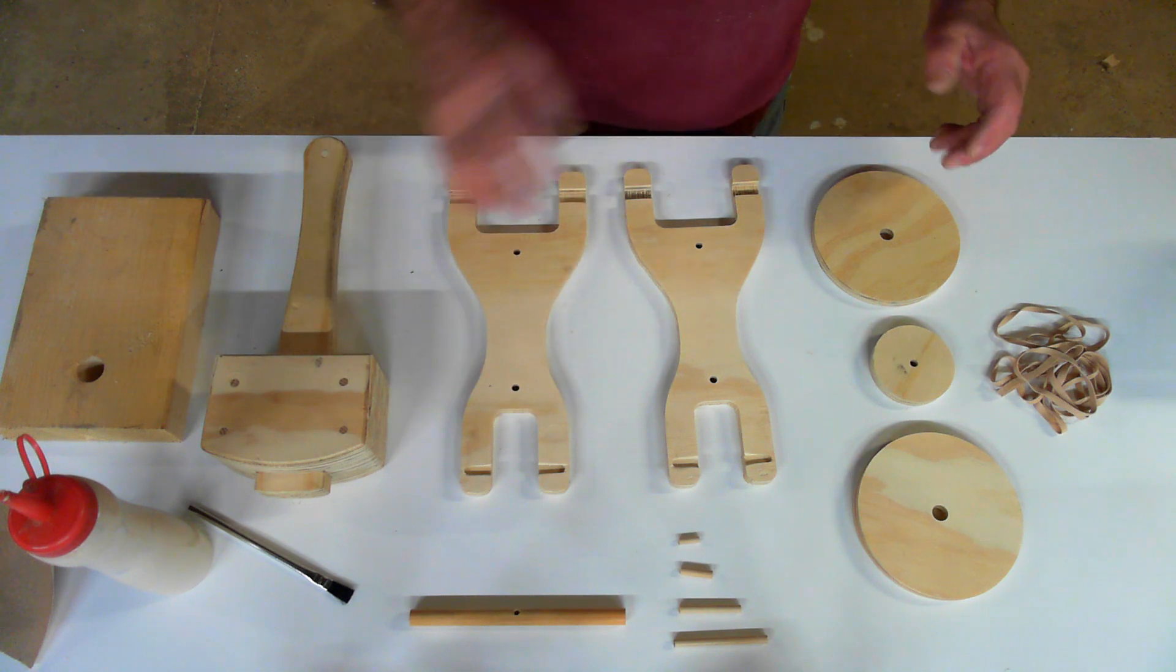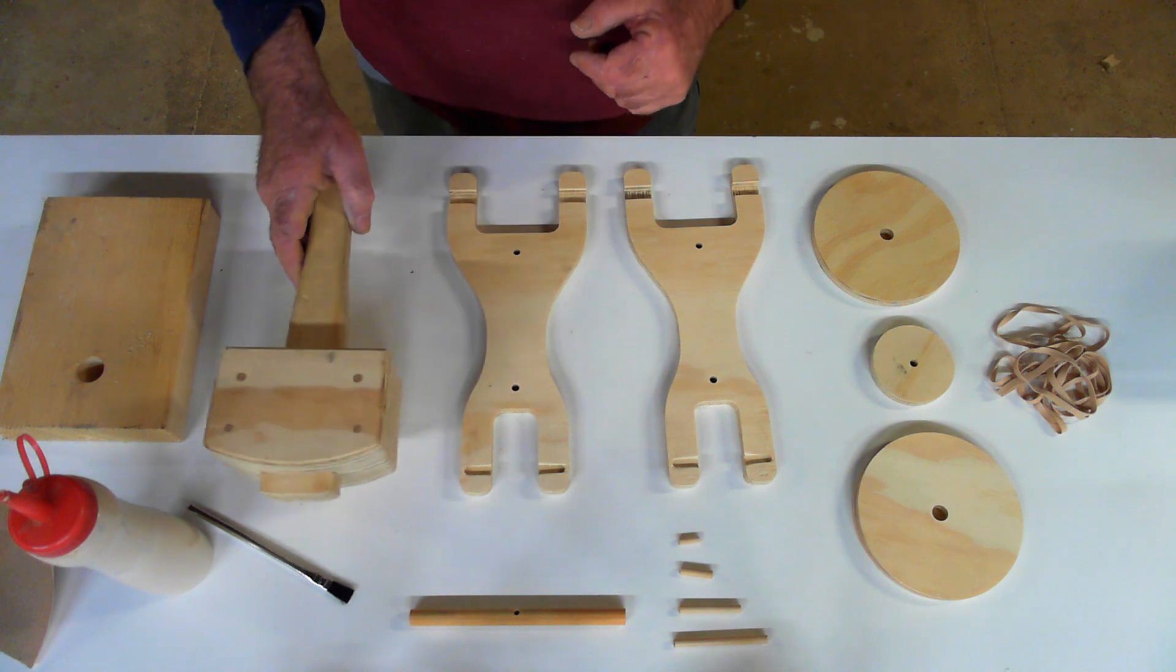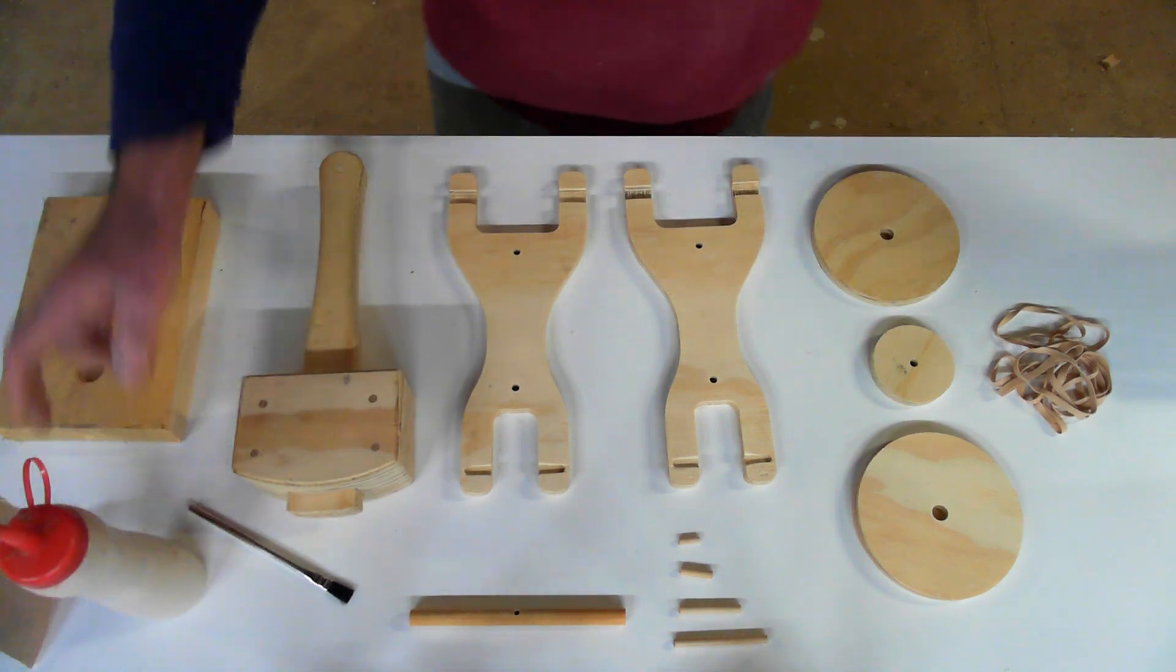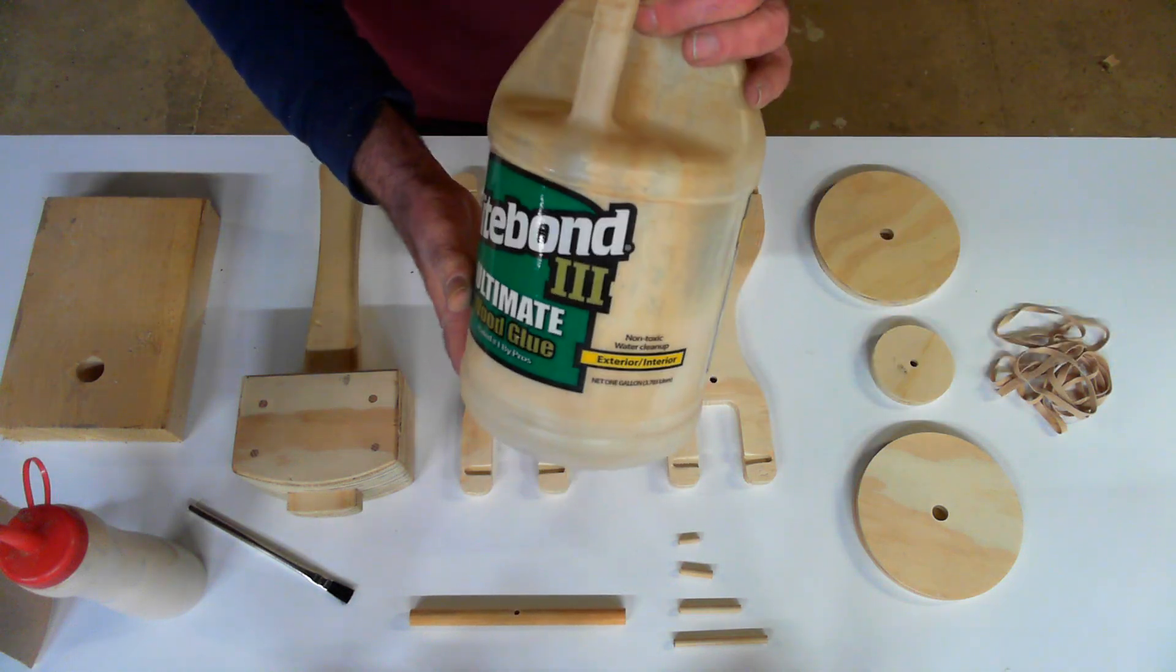So we're going to start with tools. So you need a mallet, a beater of some kind. You need some glue. I use this Titebond 3 glue, but any kind of carpenter's glue will work. This has a pretty long assembly time, so it doesn't stick really fast. So you've got some time to work.